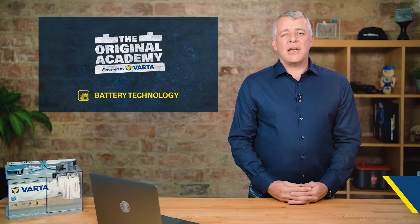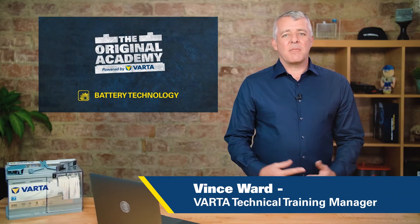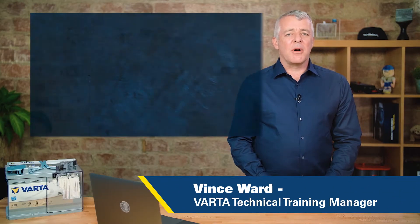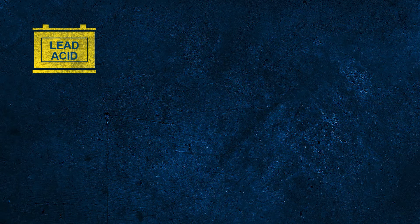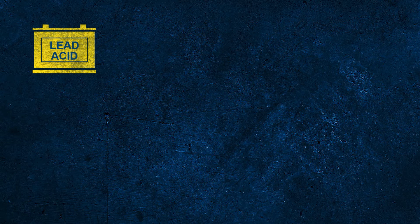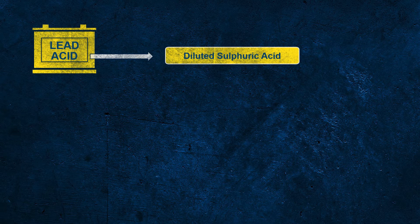Let's discuss the different technologies of batteries that are on the market now. We're talking about lead acid batteries, so let's spend a few moments to talk about both components, starting with the acid. The electrolyte is made of dilute sulfuric acid, and that's it.